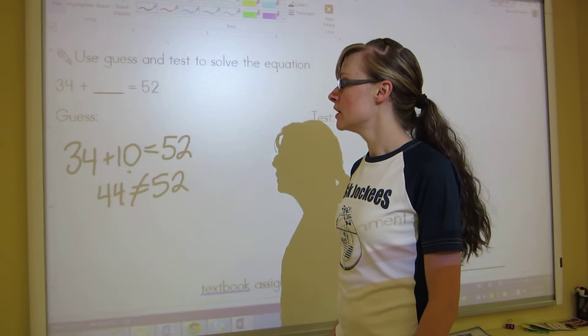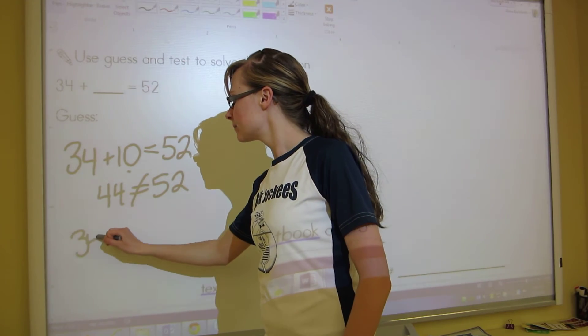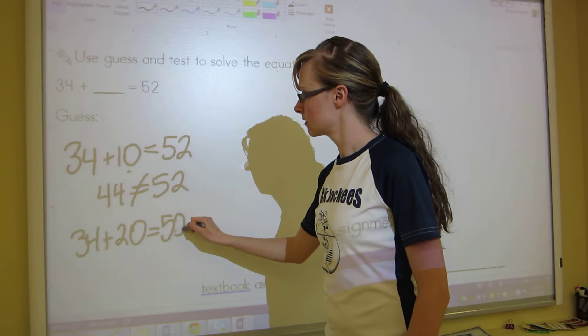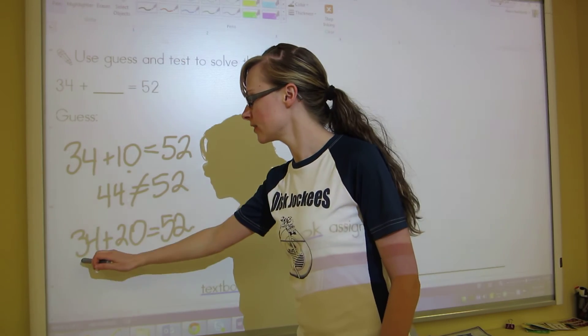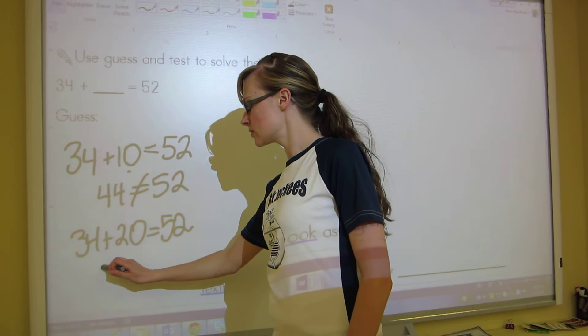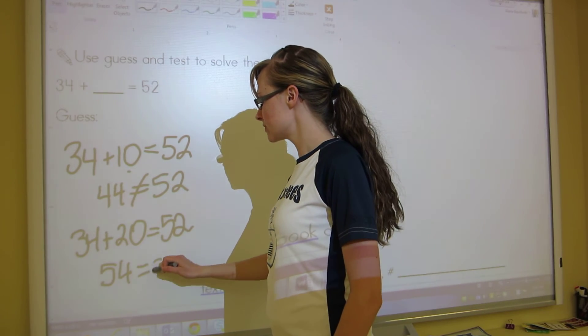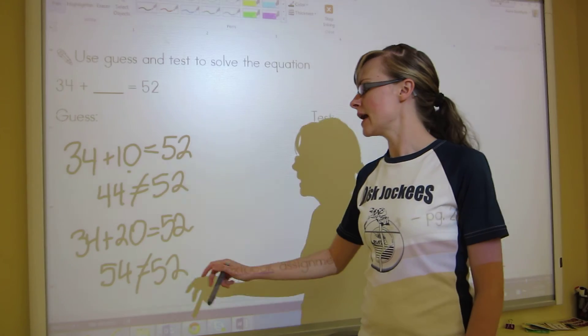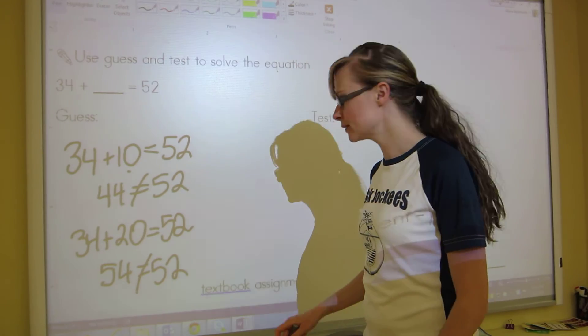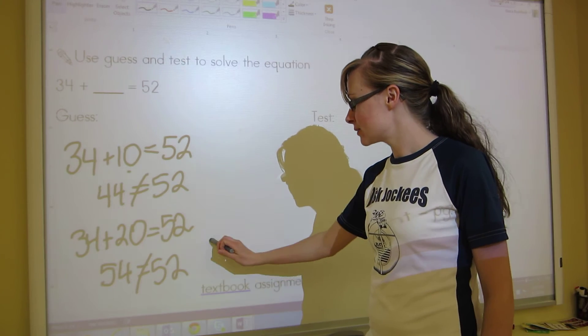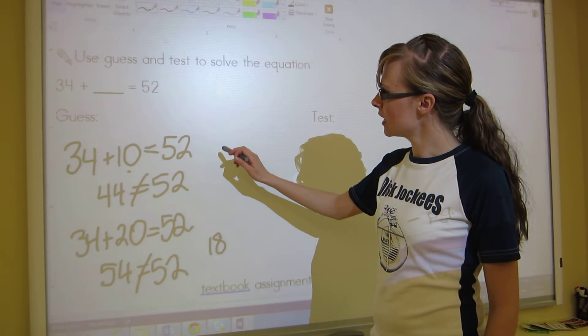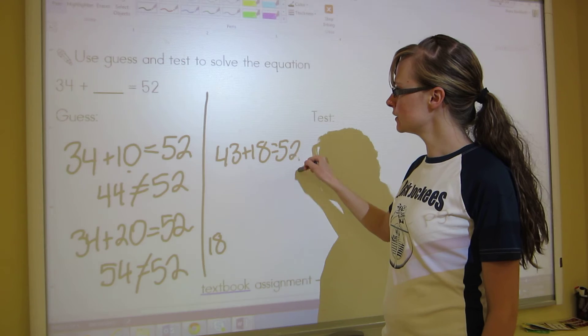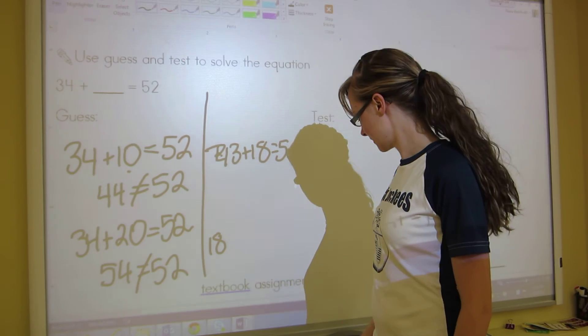Maybe I try 20 this time. Let's try it out. We've got 34 plus 20. 3 plus 2 is 5. 54 equals 52. No, those don't equal. But I know that this is only 2 bigger. So that means that 20 is only 2 off and it's too big. So I'm going to make it 18.